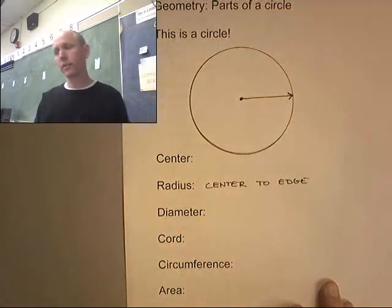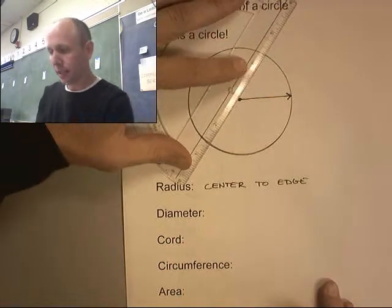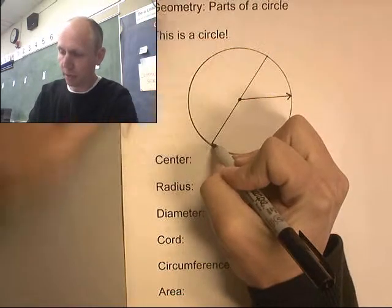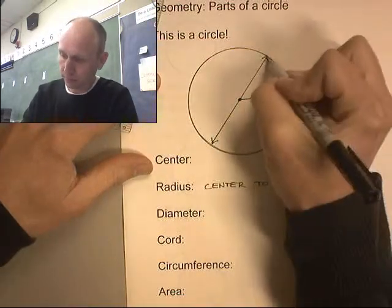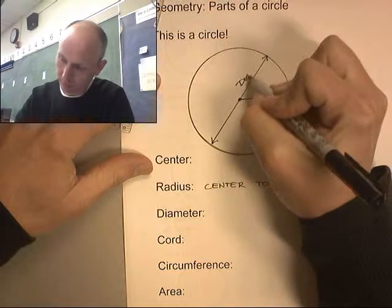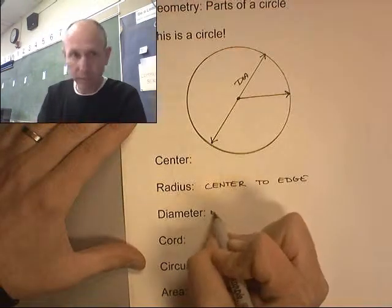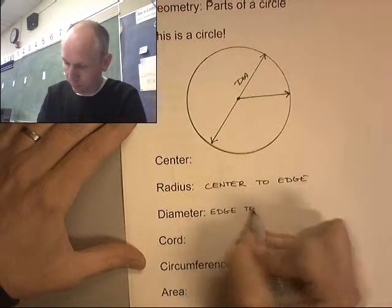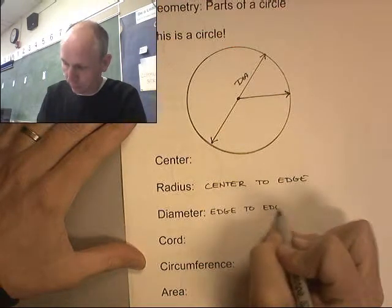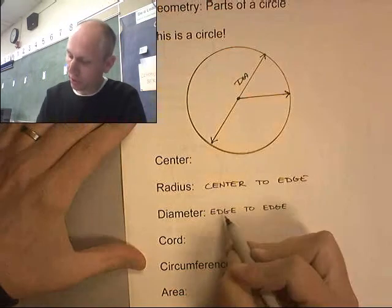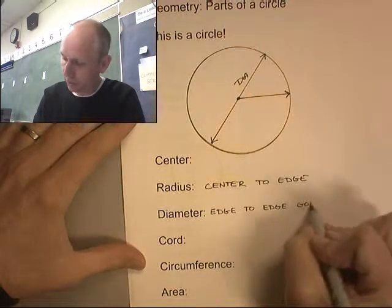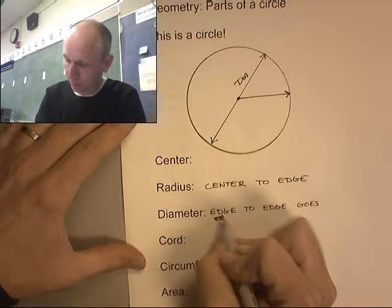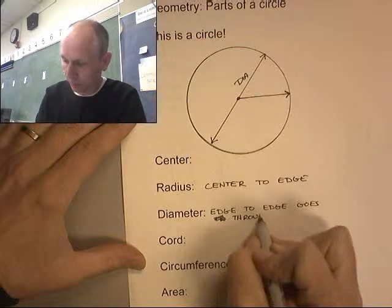The diameter of a circle is a line that goes edge to edge and goes through the center. So here's the diameter. That's the distance from edge to edge going through the center, edge to edge goes through center.